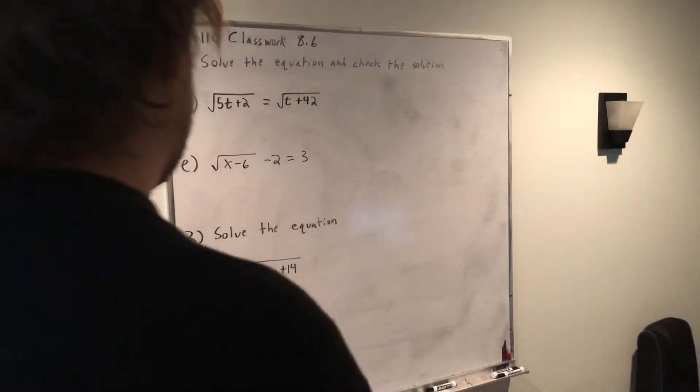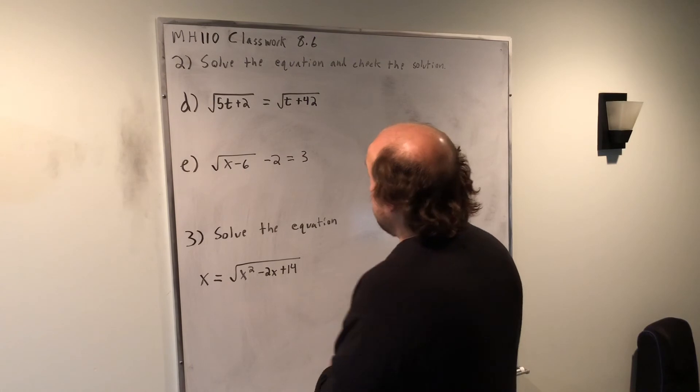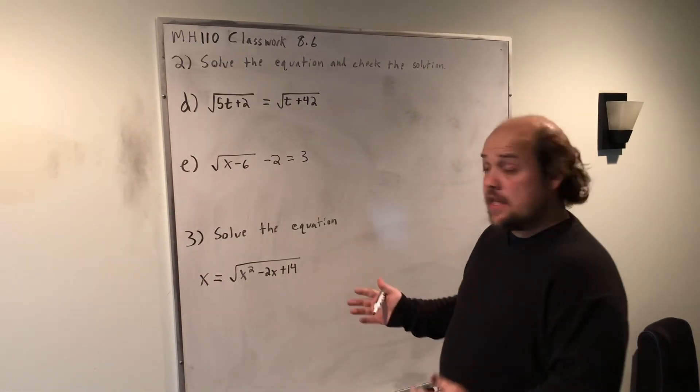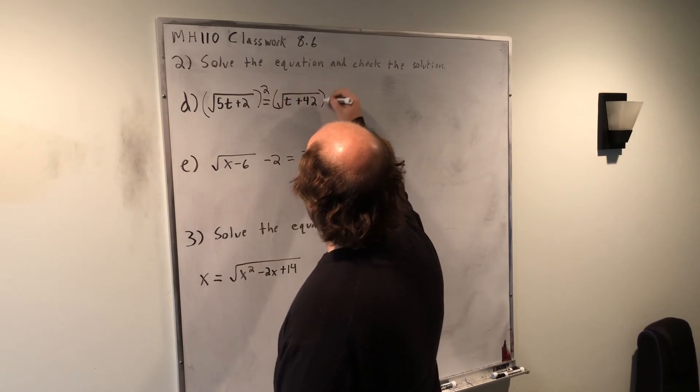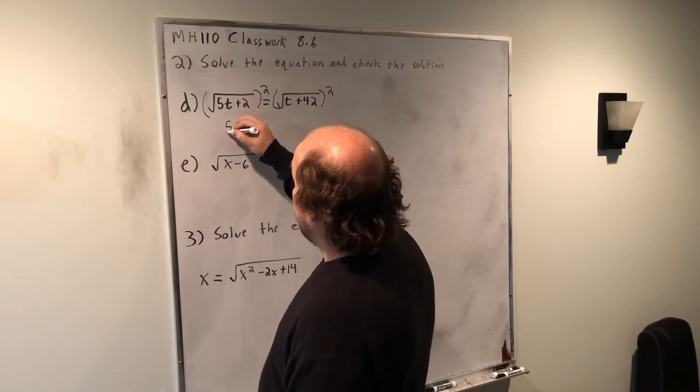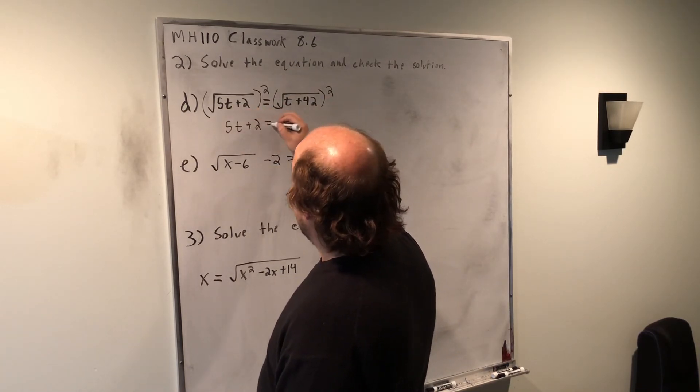When you have a root on either side of the equation, like d, as long as they're each isolated, I can just square both sides and get rid of both roots. So, on the left, I'm left with 5t plus 2. On the right, I'm left with t plus 42.